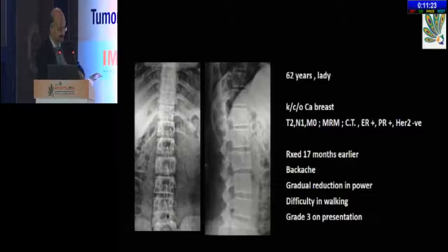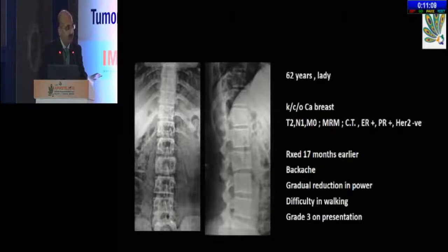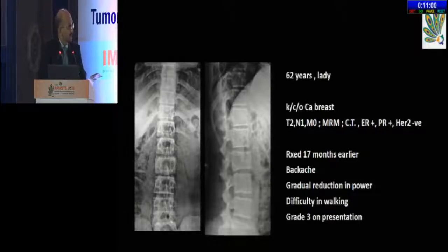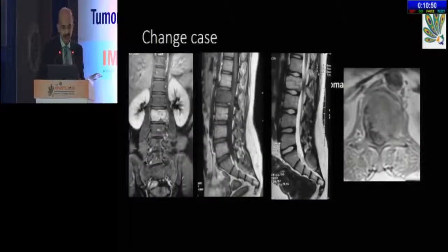Moving to the next case: a 62-year-old lady, known case of breast cancer, treated about one and a half years earlier. She had T2N1M0 disease, treated with modified radical mastectomy. She was ER/PR positive and HER2 negative. After one and a half years, she started complaining of backache and a gradual reduction in power in her legs, difficulty in walking, and on examination had grade 3 power. She was oligometastatic — very few flat bone metastases in the ribs and other vertebrae, not more than four in all.